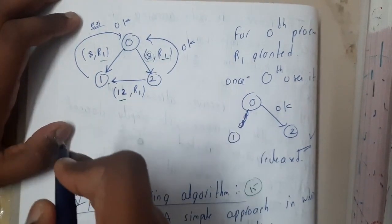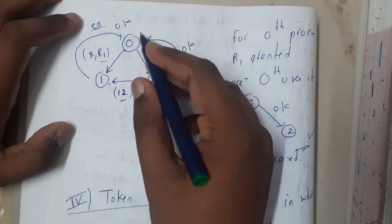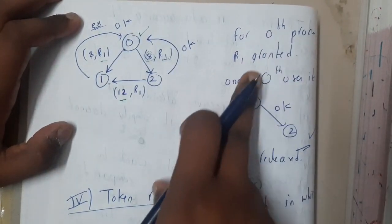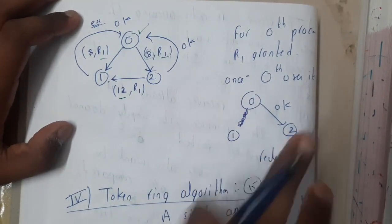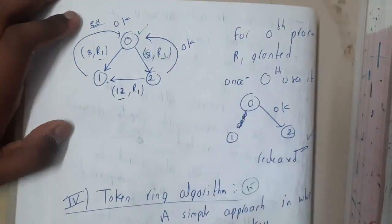That is the reason why zero gets a chance first. Zero is selected and is granted permission, so it will use. Once all the using is done, it will be giving chance to two. In that way it will work.